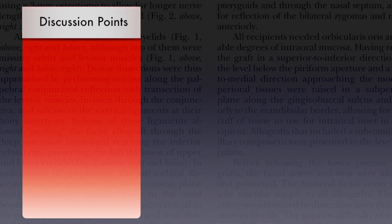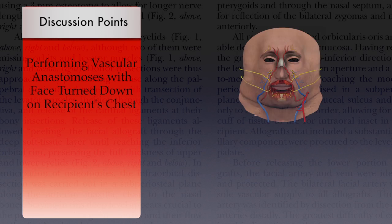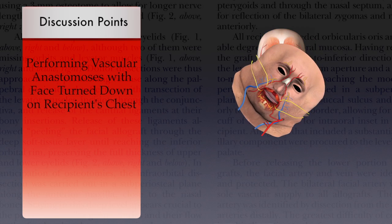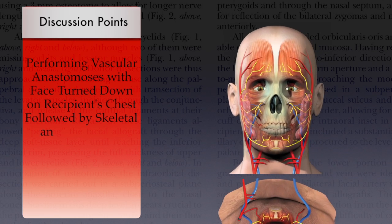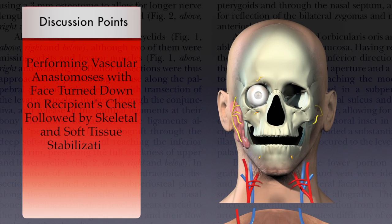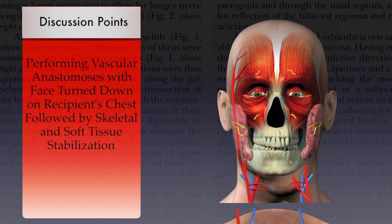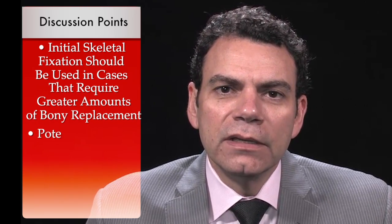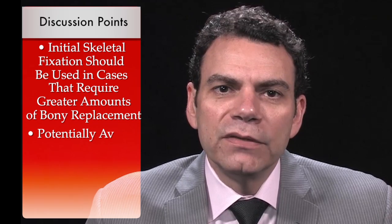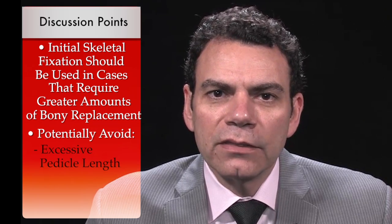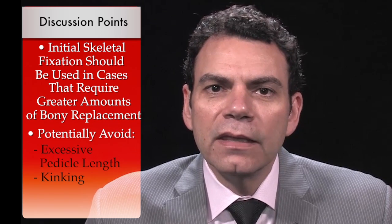The manuscript describes performing the vascular anastomosis with the face turned down on the recipient's chest and then proceeding with skeletal and soft tissue stabilization. Although this approach has proven successful, one could argue that initial skeletal fixation be performed in cases that require greater amounts of bony replacement, and therefore potentially avoid excessive pedicle length, kinking, or stress on the vascular anastomosis.